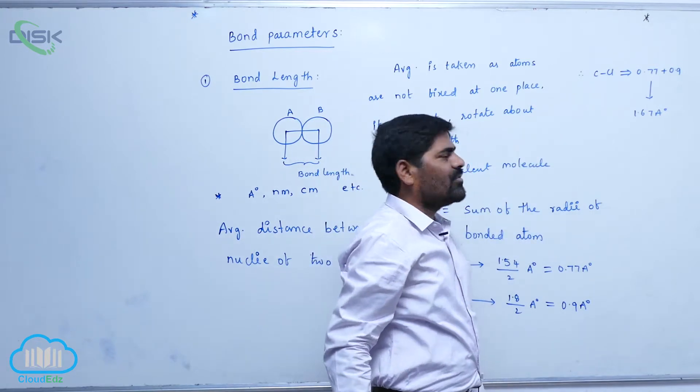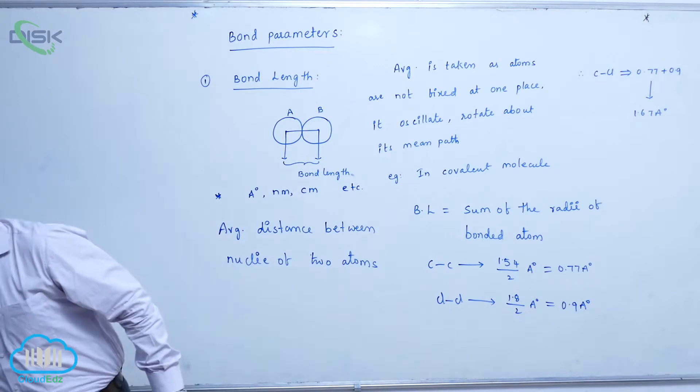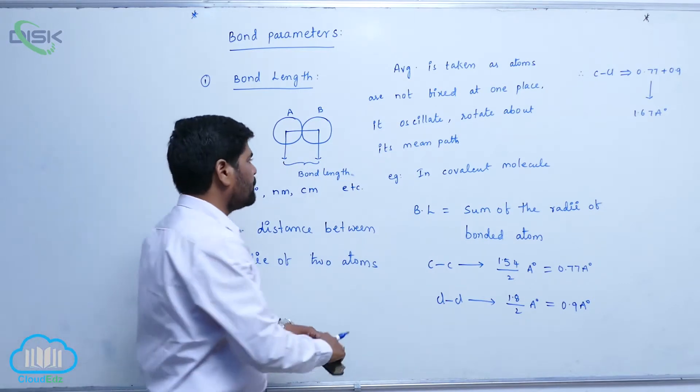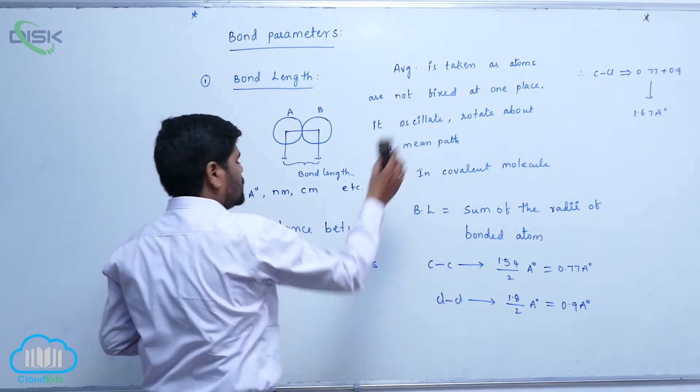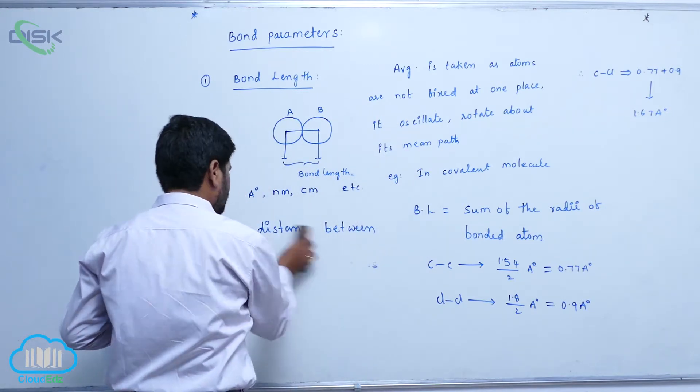So therefore that is 1.67 angstrom units. So this form of bond lengths. The first bond length is on its definition. Next one.